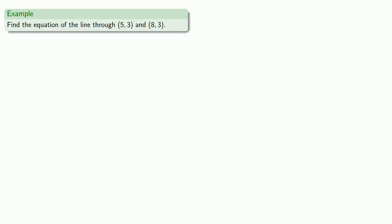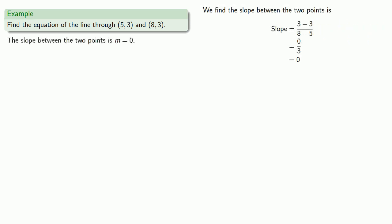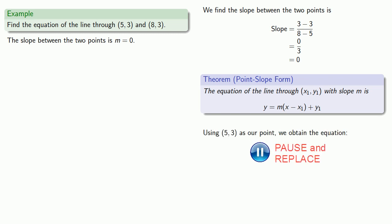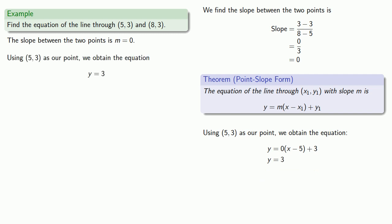Let's take another example: find the equation of the line through the points (5, 3) and (8, 3). First, we find the slope between the two points, which works out to be 0. Putting our equation in point-slope form and using the point (5, 3), we get y equals 0 times (x minus 5) plus 3. The term 0 times (x minus 5) drops out entirely, giving us the final equation y equals 3.